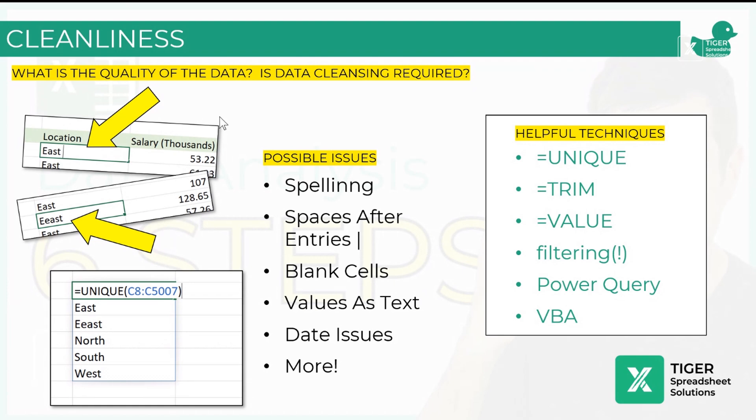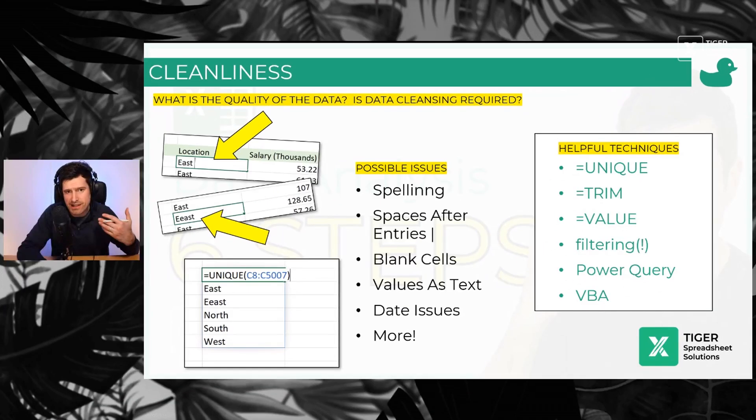You should be using data validation. You should be using data validation on your spreadsheets, things like dropdown menus, because they're going to stop this kind of problem. But I understand almost inevitably, you're going to have some data cleanliness, data quality issues.